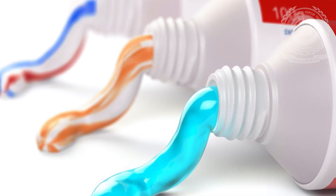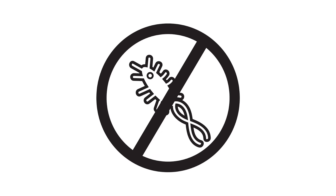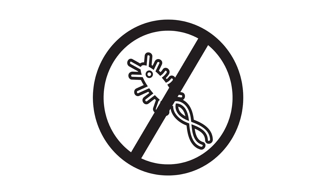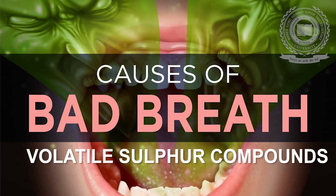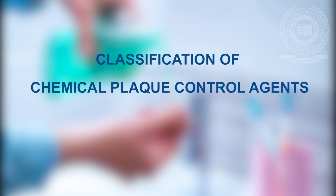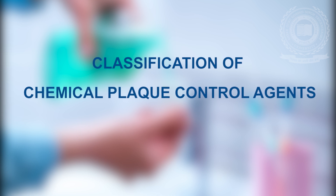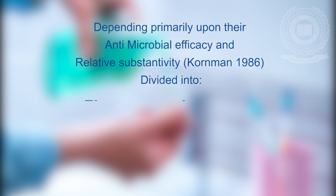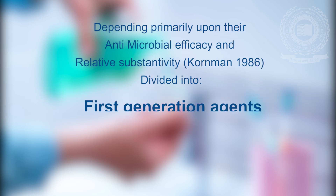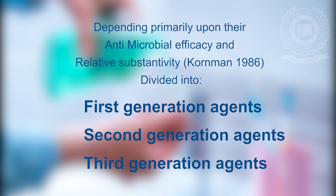Treatment consists of not only the mechanical removal of microorganisms but also the use of mouth rinses and toothpaste containing various chemicals. Some of these chemicals mask the oral malodor only, whereas others produce an antibacterial effect or neutralize the volatile sulfur compounds. Now coming to the classification of chemical plaque control agents — 1st generation, 2nd generation, and 3rd generation.